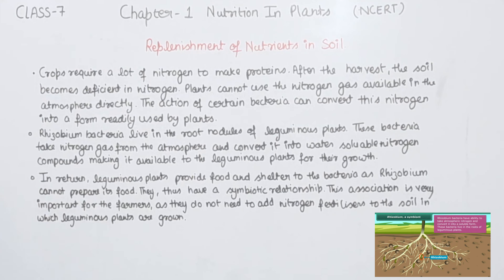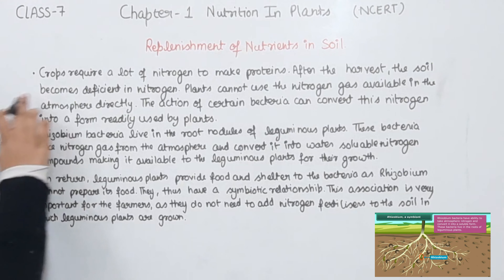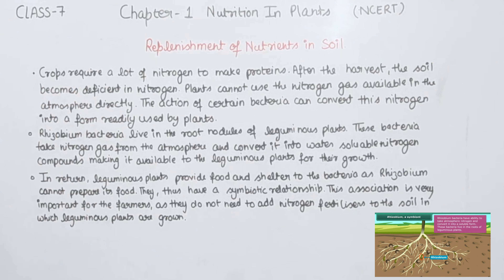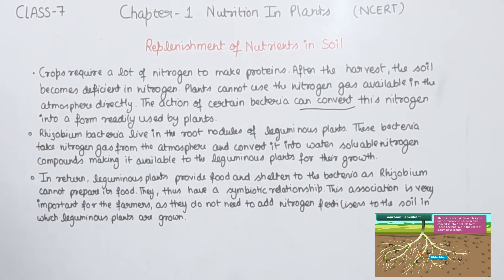The next topic is replacement of nutrients in soil. Crops require a lot of nitrogen to make protein. After the harvest, the soil becomes deficient in nitrogen. Plants cannot use the nitrogen gas available in the atmosphere directly, so the action of certain bacteria can convert this nitrogen into a form readily used by plants.